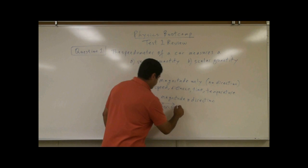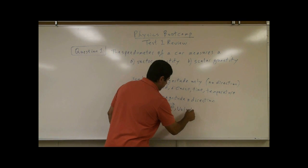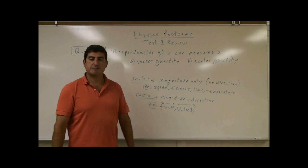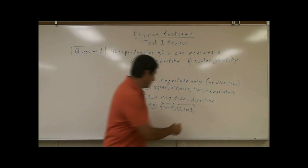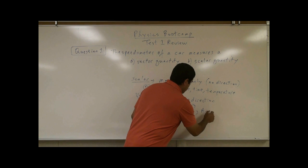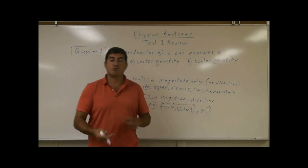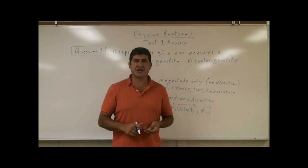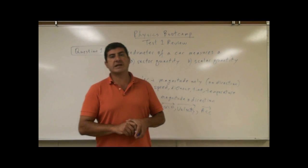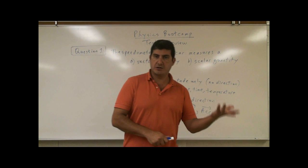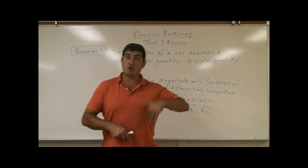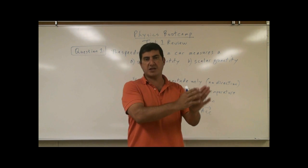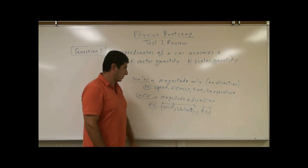Velocity is a vector quantity. Acceleration is a vector quantity. Both of those need direction to them. So if you're going to state your velocity, you have to say something like, I'm going at 60 miles per hour to the right. I'm going 60 miles per hour from south to north, because you have to state your direction. But speed, you don't have to.